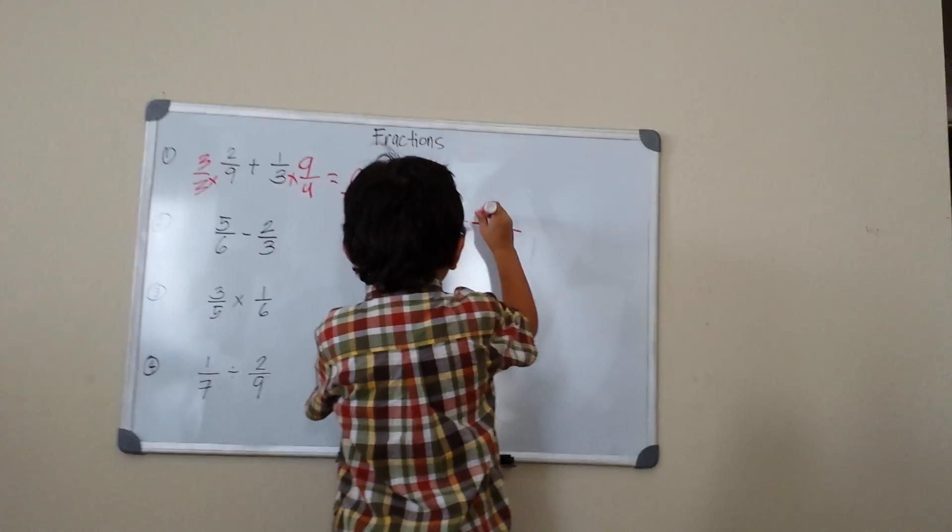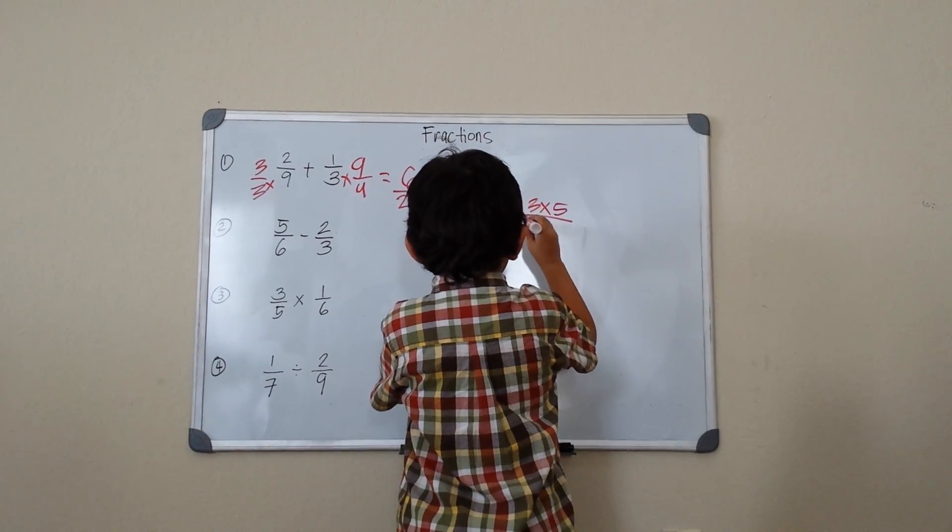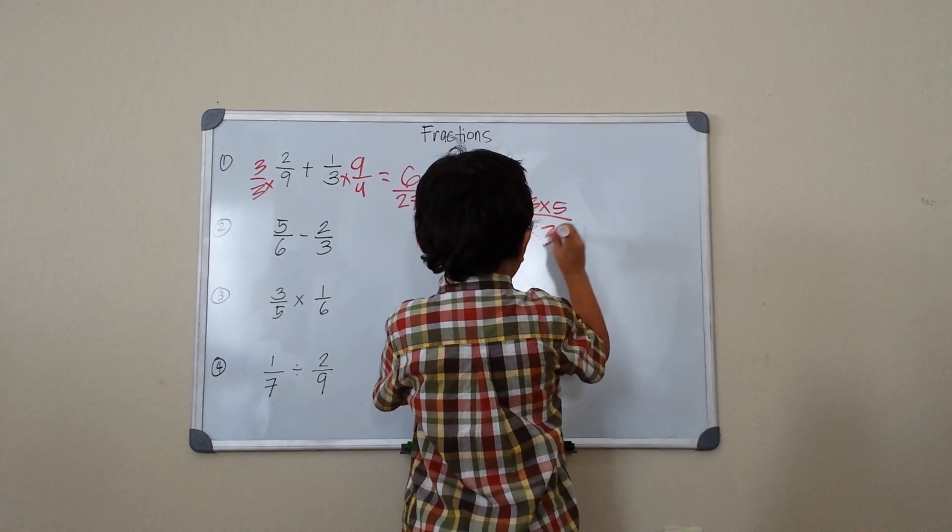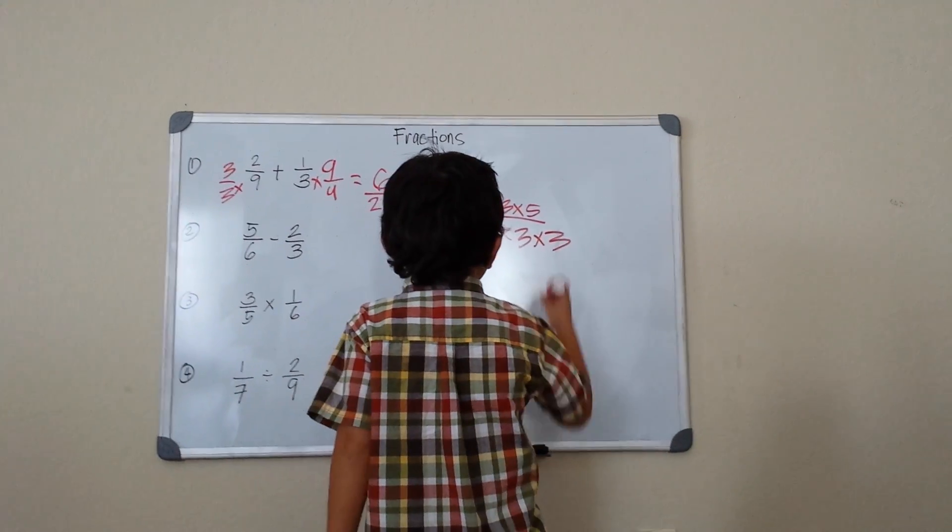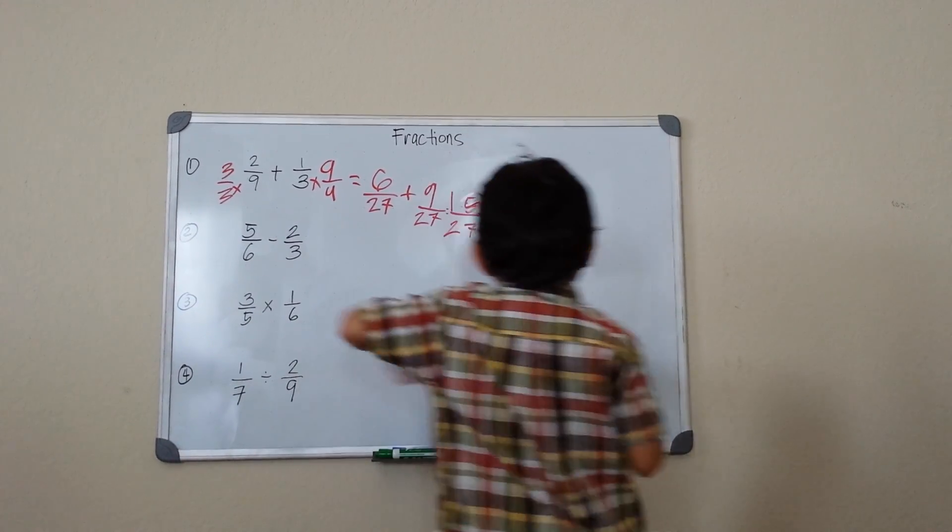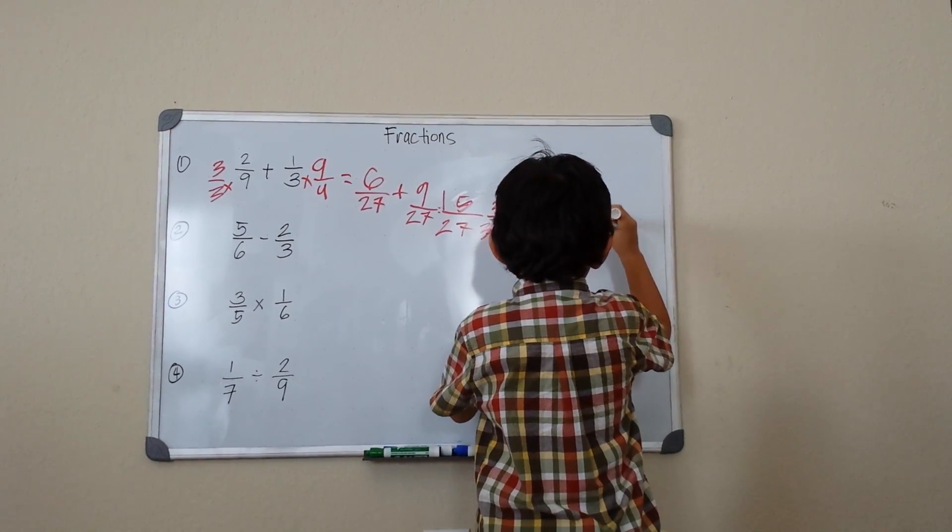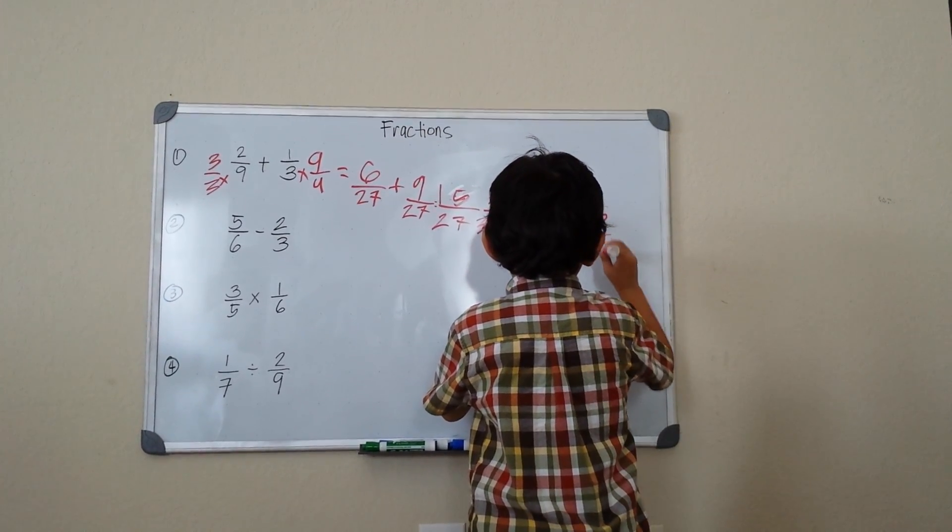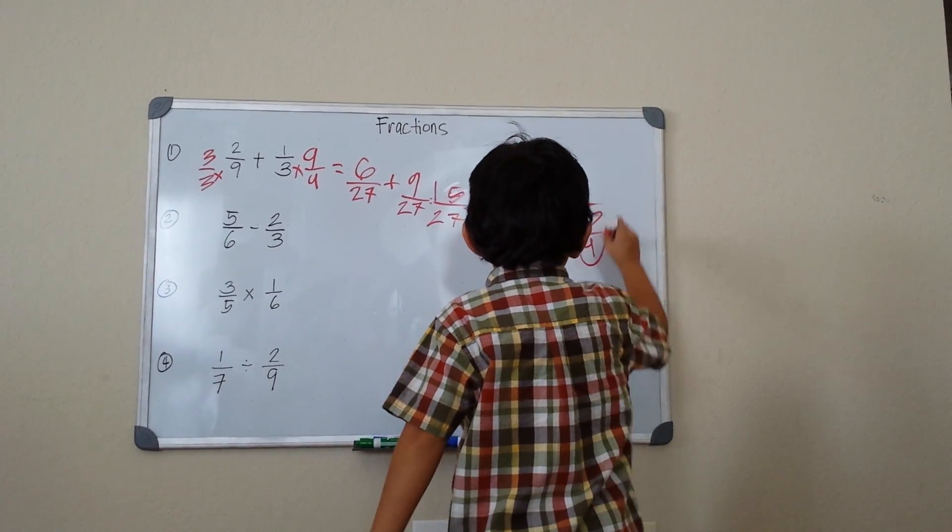15 is 3 times 5, and 27 is 3 times 9. Now I can cancel the common denominator, so our answer should be 5/9. So that is your answer.